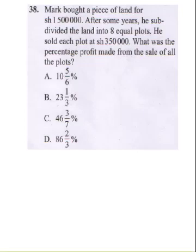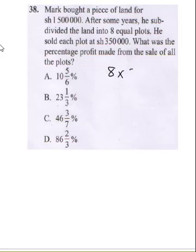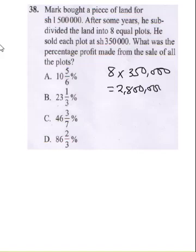Question 38 says: Mark bought a piece of land for 1.5 million shillings. After some years, he divided the land into 8 equal plots. He sold each plot at 350,000 shillings. What was the total percentage profit made from the sales of all the plots? The first thing you need to do is he sold 8 plots at 350,000 each, so this gives a total of 2.8 million shillings.